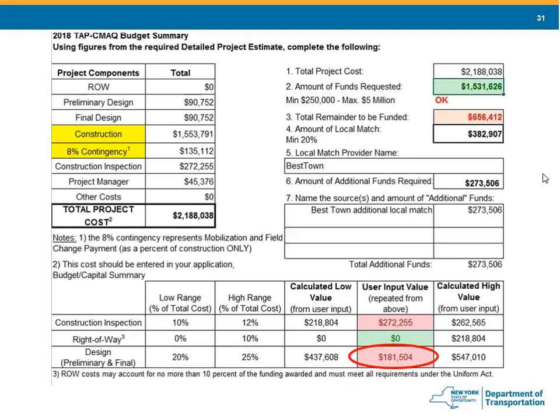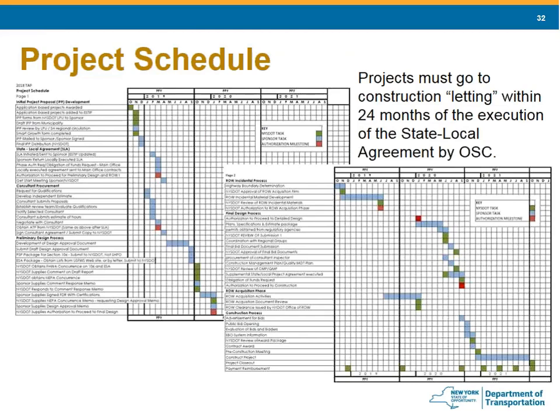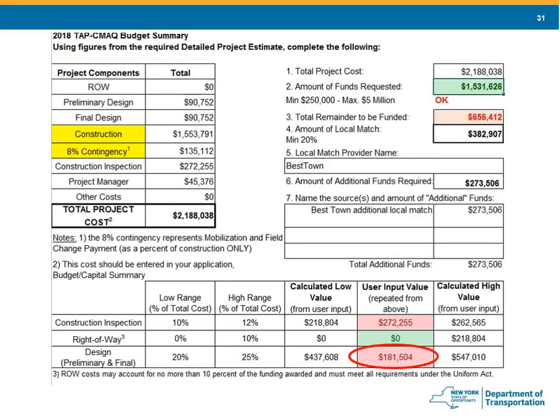Ensure you have the appropriate 20% qualifying match. TAP-CMAQ can reimburse up to 80% of eligible project costs — you must pay 100% of costs upfront and request reimbursement of 80% of eligible items. Right-of-way costs may account for no more than 10% of funding awarded and must meet all requirements under the Uniform Act. Describe all sources of other funds in the budget estimate. With approval from NYSDOT, eligible other funds may qualify as the local match. Areas where potential funding problems may become apparent will jump out to sponsors and reviewers — you should be able to explain large differences from the general norm.